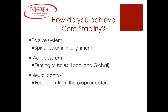We can achieve core stability passively, actively, and through neural control. The passive system covers the proper arrangement and alignment of the spinal column, supported by the spinal ligaments — the anterior and posterior longitudinal ligaments — as well as the thoracolumbar fascia. The active system is through engagement of both the local and global muscles. Feedback from our proprioceptors, namely the Golgi tendon organs and our muscle spindles, help us to prevent injury through proper sequencing of muscle contraction. This feedback lets the body know when to contract or relax a muscle so that core stability can be achieved.